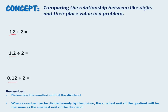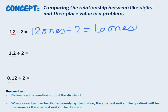Determining the unit form of our dividends will help us to determine the unit form of our quotients. The first problem is 12 ones divided by 2, so we write 12 ones divided by 2, which is 6 ones. The unit form of our dividend is the ones because the smallest unit is in the ones place. Our second problem has 1 and 2 tenths, which put into unit form is 12 tenths divided by 2.